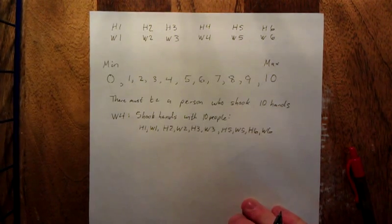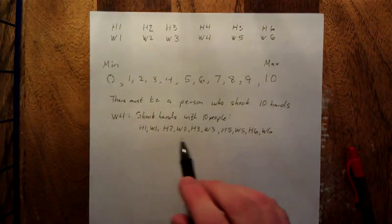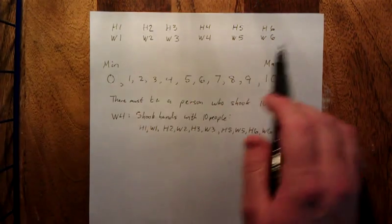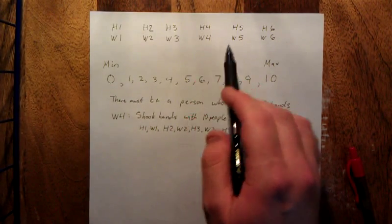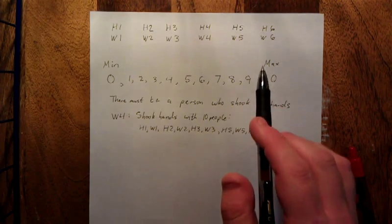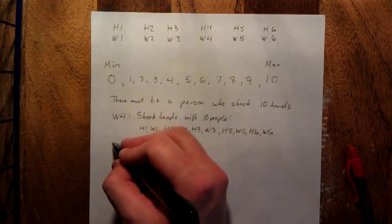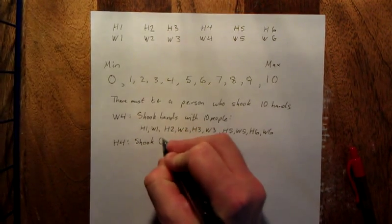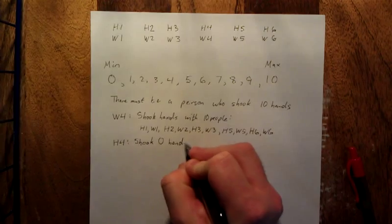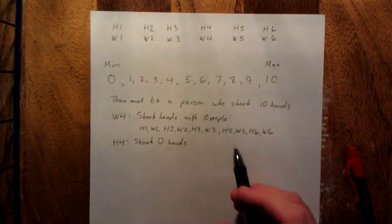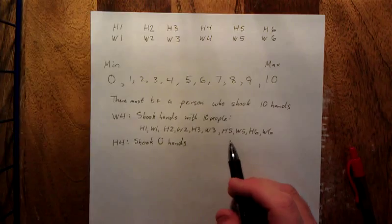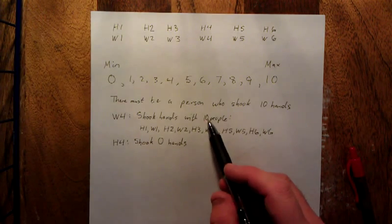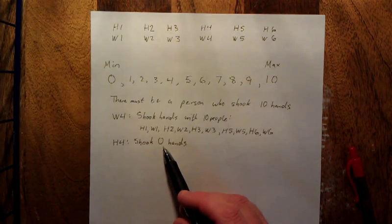So now at this point we have our one person that shook hands with ten people, and that was wife number four. Now at this point everybody who is here at the party except for husband number four has shaken somebody's hand, which means that husband number four out of necessity has to be the person that shook exactly zero hands. Everybody else at the party has shaken one hand at this point.